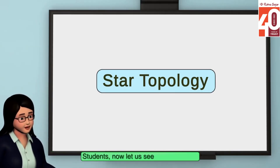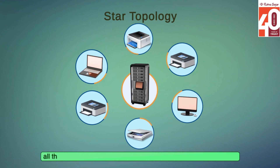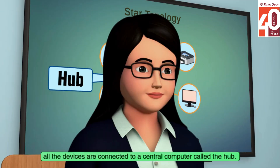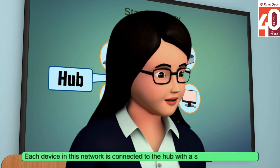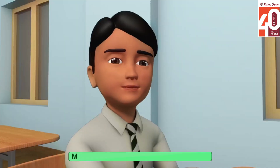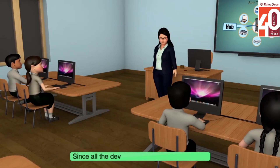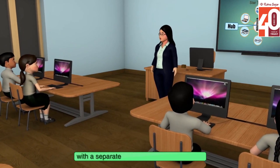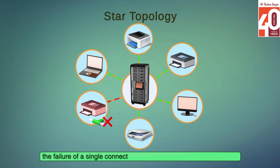Now let us see star topology. In this type of network topology, all the devices are connected to a central computer called the hub. Each device in this network is connected to the hub with a separate connection. What is the advantage of star topology? Since all the devices are connected to the hub with a separate connection in star topology, the failure of a single connection does not affect the entire network.